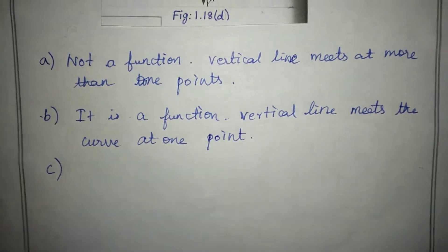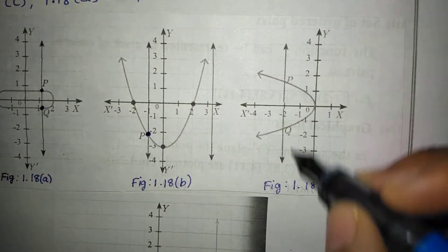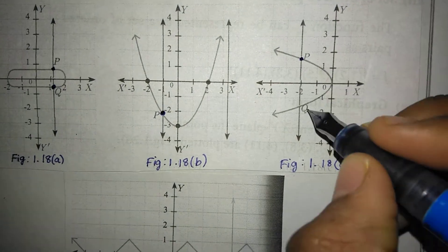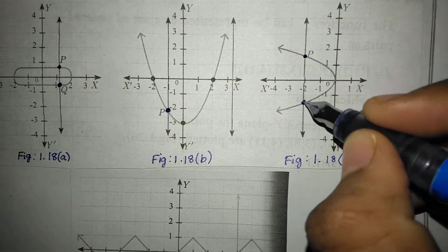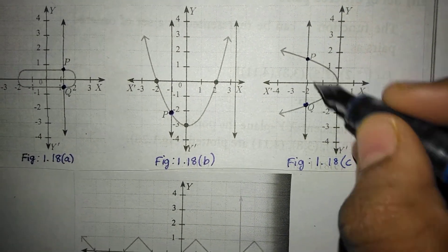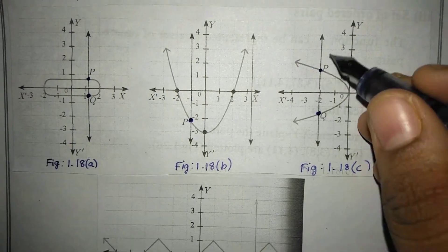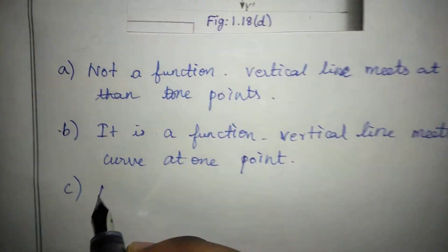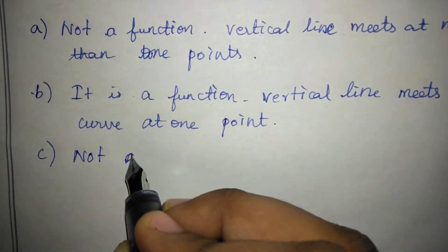And next, C. For C, if we draw a vertical line, we get points P and Q — more than one point. So it is not a function. C is not a function.